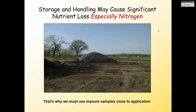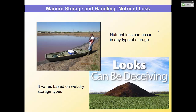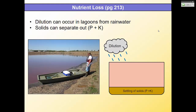Nutrient loss can occur in any type of storage — whether dry or in a wet lagoon. It varies based on whether it's wet or dry and the bedding mixed with it. One way nutrients are lost in a lagoon is when solids settle to the bottom — solids carry a lot of the phosphorus and potassium. A good farmer will agitate that lagoon to mix it back up. Poor sampling technique — taking only from the surface without agitating — can give you low phosphorus and potassium values.